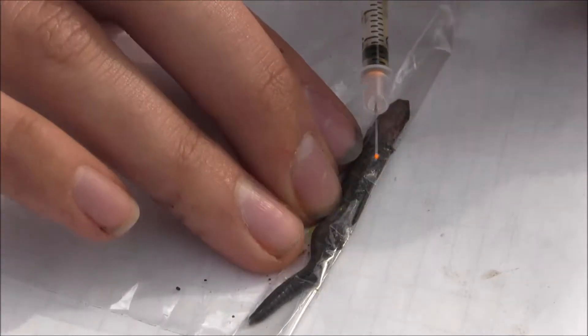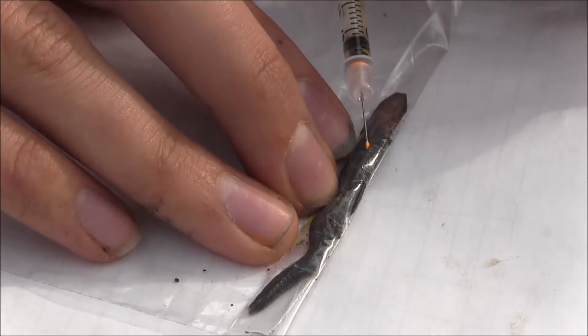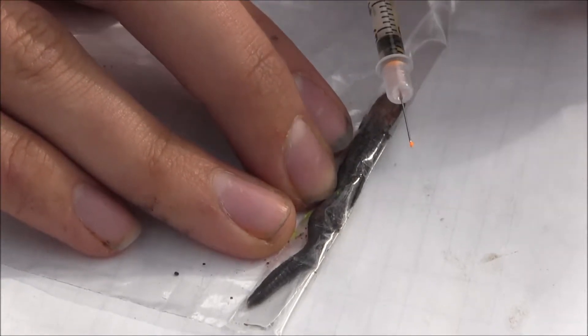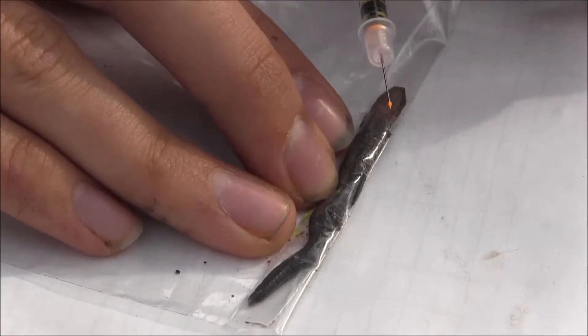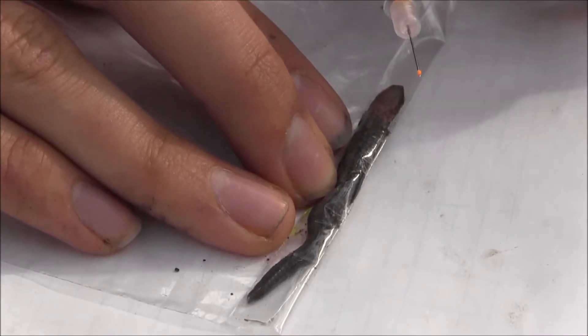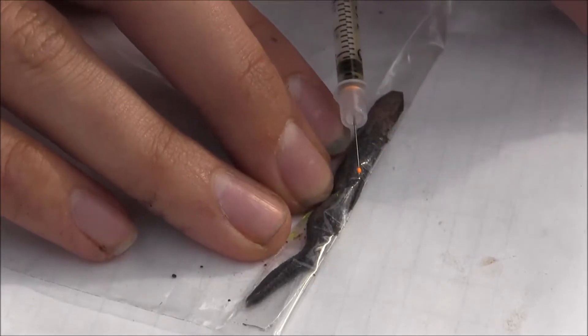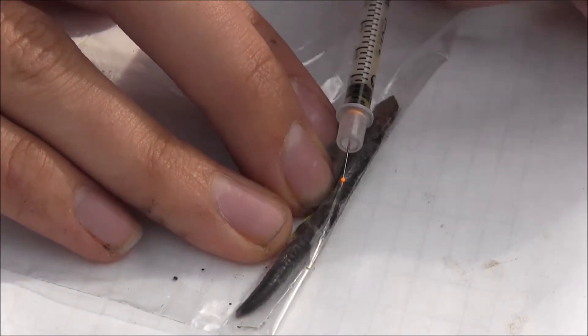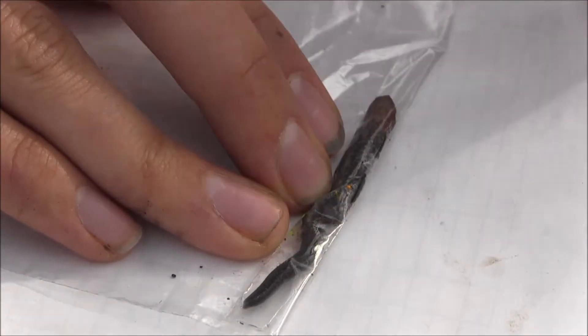So, you want to come in as parallel to the skin as possible. If the mark's too deep, it can migrate or break up and become hard to see. But if the mark's too shallow, you might not even be under the skin at all. So, come in here parallel to the skin. Gently apply pressure.